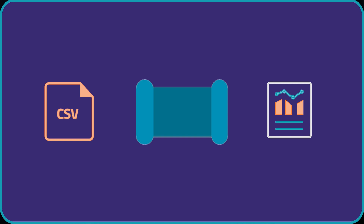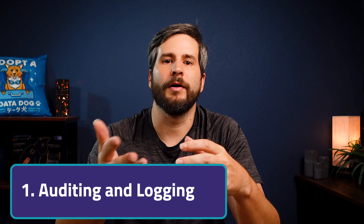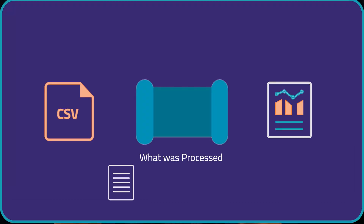You start with a source and a destination. Let's say a source is a daily CSV file and a destination is a reporting dataset — that's the core of it. First, we want to make sure we have good auditing and logging. We want to know what files we process so we can validate if anything was missed, and when the file was loaded so we can alert if data gets stale.